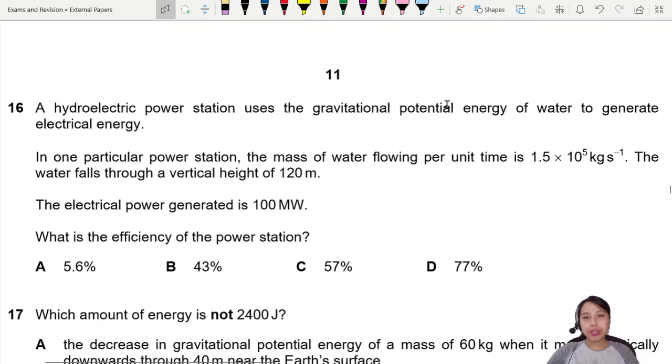A hydroelectric power station used GPE of water to generate electrical energy. That's interesting. So water flowing from a very high place has GPE. The energy is converted to electrical energy. That's how we get electricity for some countries.